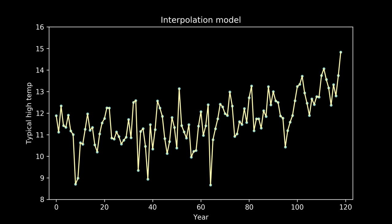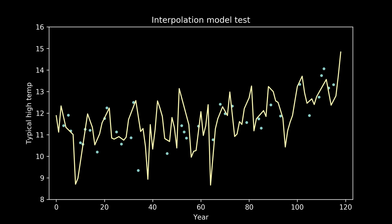Too much variance in our model will also cause it to fail. It won't generalize well. Instead of capturing just the pattern we care about, it will also capture a lot of the extraneous noise that we don't care about. The patterns in the noise will be different from situation to situation, so when we try to apply our model to a new situation, it'll have extra error. This is also called overfitting.